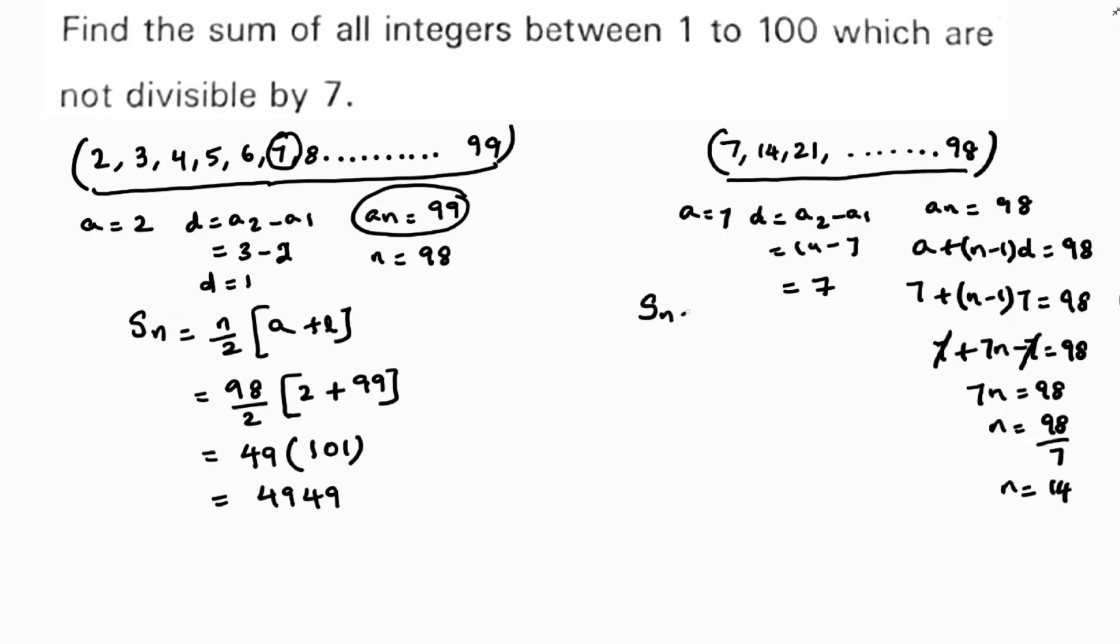So here SN formula, n by 2 times a plus l. 14 by 2 times a is 7, l is 98. 7 times 98 plus 7 is 105. 7 into 105 is 735.